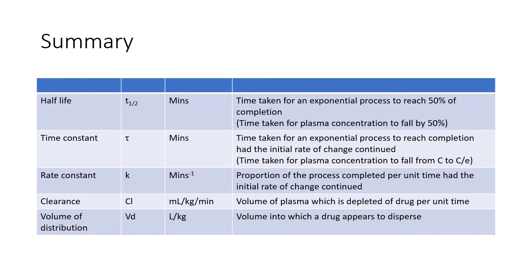Rate constant is the proportion of the process completed per unit time had the initial rate of change continued. Clearance is the volume of plasma which is depleted of drug per unit time. Volume of distribution is the volume into which a drug appears to disperse.